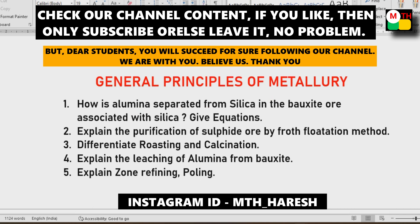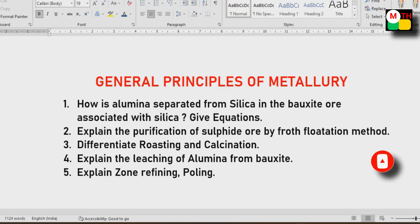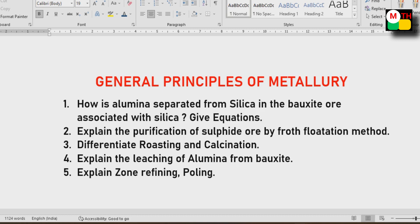General Principles of Metallurgy: first question — how aluminium is separated from silica in bauxite associated with silica, give equations. Purification of sulphide by froth flotation method, roasting and calcination, leaching of aluminium from bauxite, zone refining. This unit is very important — 100% equal to 2 units.